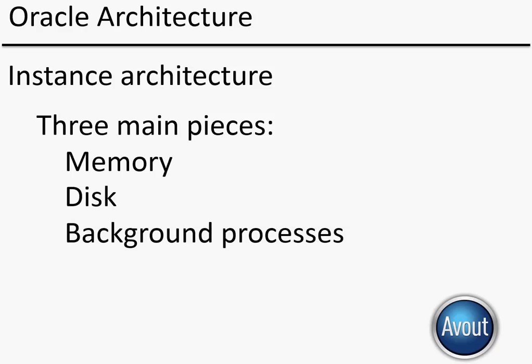Memory is much faster than accessing information on disk, so Oracle is going to try to do as much as it possibly can in memory. Unfortunately, we can't keep our entire database in memory — databases have grown so large that it's virtually impossible. Oracle will keep key pieces in memory and do as much processing as possible there, but occasionally it'll have to go out to disk. Background processes are the programs that run in the background to keep everything synchronized between memory and disk.